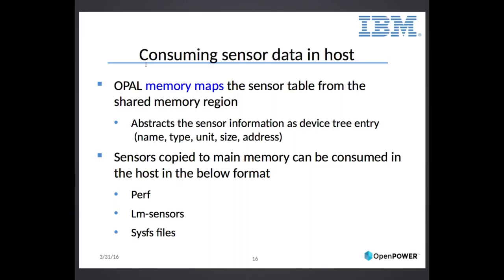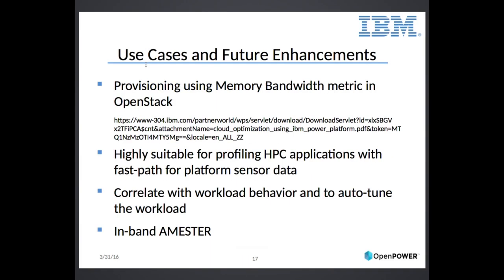How do we consume it? Memory mapped — reading memory. Sensors via PERF, LM Sensors, and SysFS files. How could this be useful? In an OpenStack cloud environment, you could provision new virtual machines based on memory bandwidth usage on each node. If a machine has all its memory bandwidth consumed, you might provision a new VM on a machine with less bandwidth being used. So alongside IOPS and network usage per node, you can now also know memory bandwidth and temperature and more evenly balance things across your cloud.